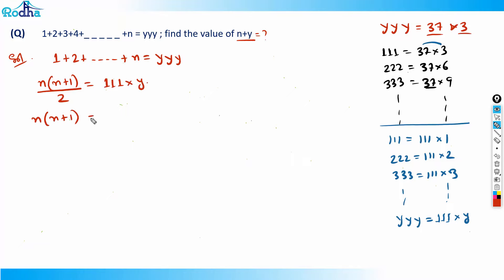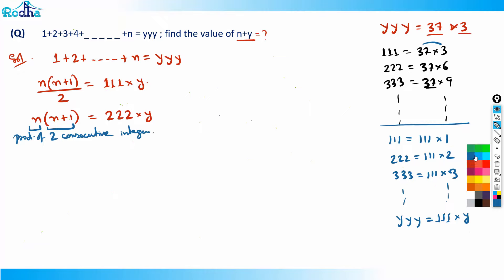Now, n(n+1) is always a product of two consecutive integers. In any two consecutive integers, one will always be even and one will always be odd. So the product n(n+1) is always even times odd — this is an important observation to keep in mind.